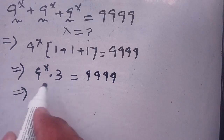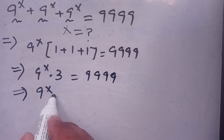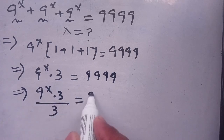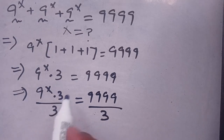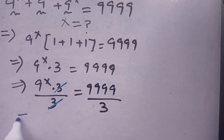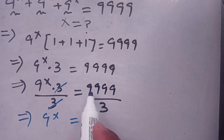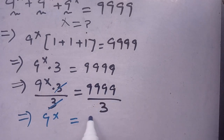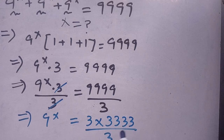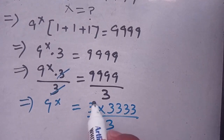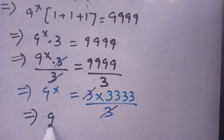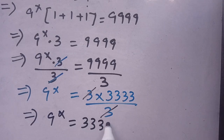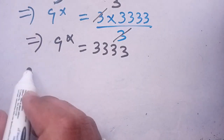Now, dividing both sides by 3, we get 9 to the power x times 3 divided by 3 is equal to 9999 divided by 3. We can cancel out the 3s, and we have 9 to the power x is equal to 3333, since 9999 divided by 3 equals 3333.